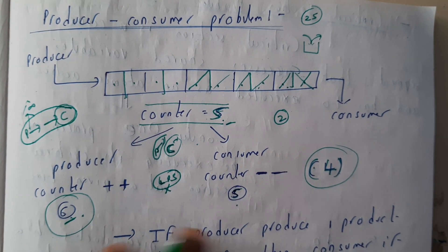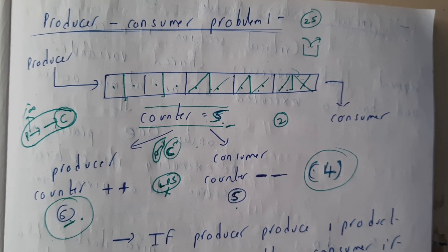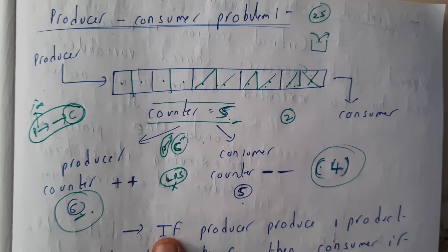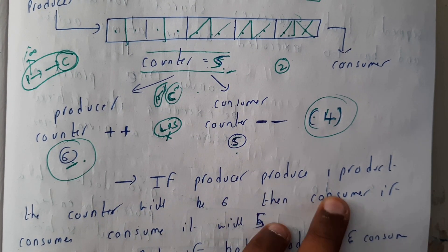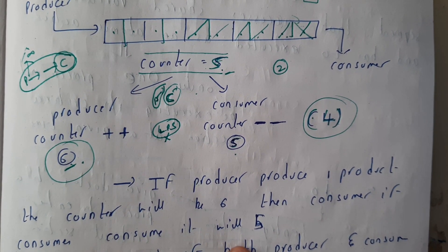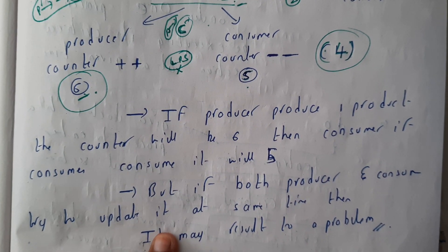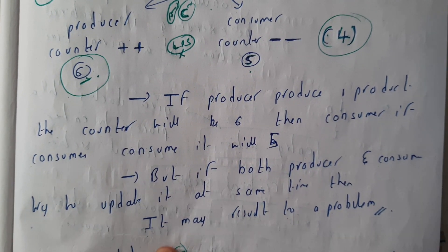If producer produces one product, the counter will become six. Then consumer consumes it, it becomes five. But if both producer and consumer try to update it at the same time, then this problem will result.